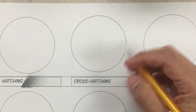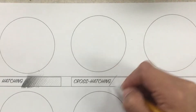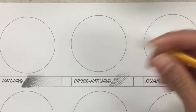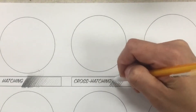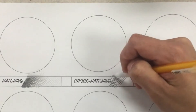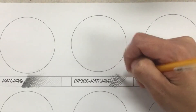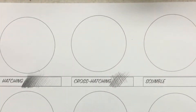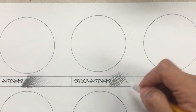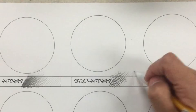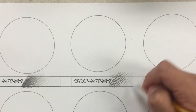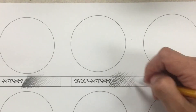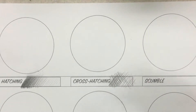Cross-hatching is where you hatch and then do some kind of crisscrossing over the hatching to make it darker. The same idea of hatching applies — you can do more space and lighter pressure to make an area look lighter.